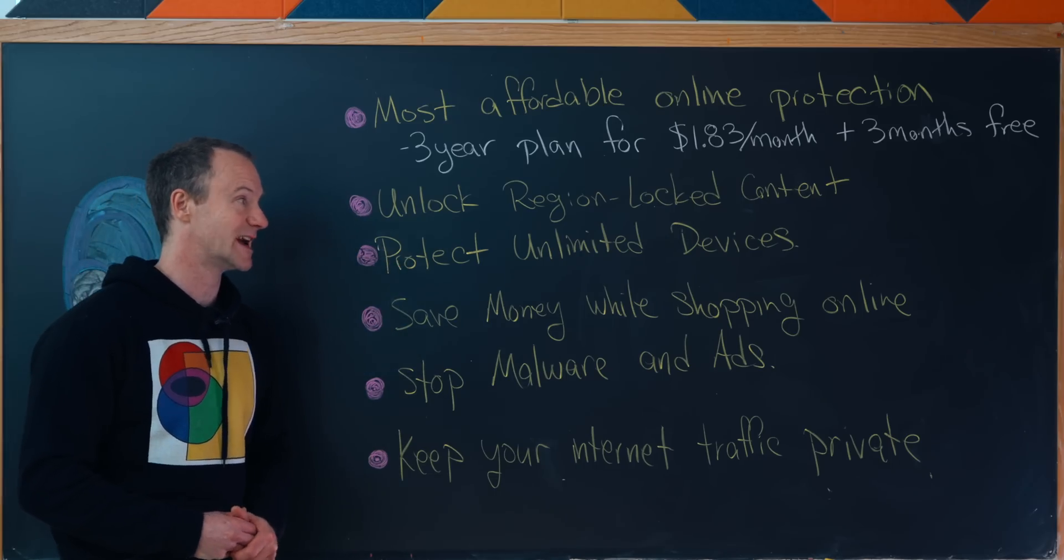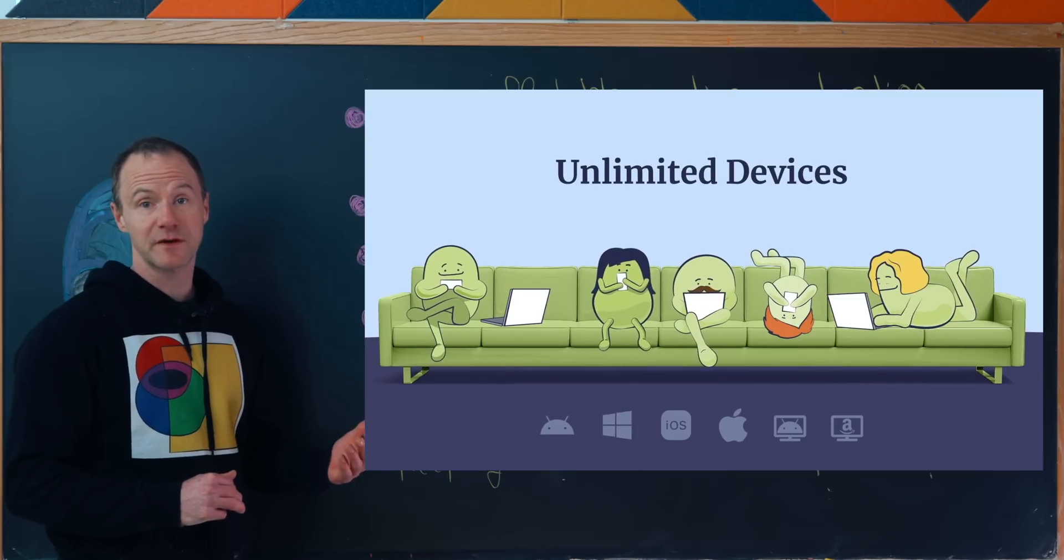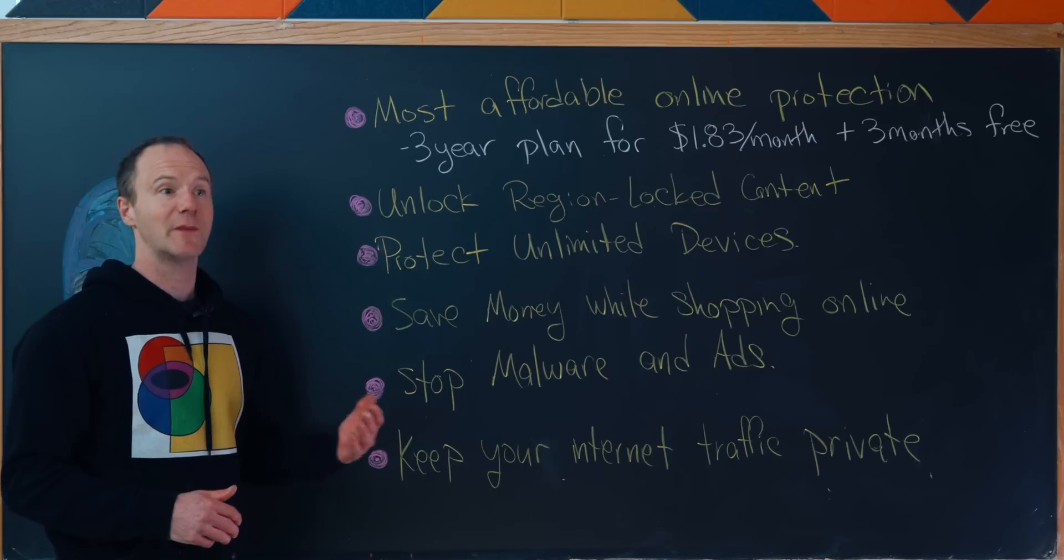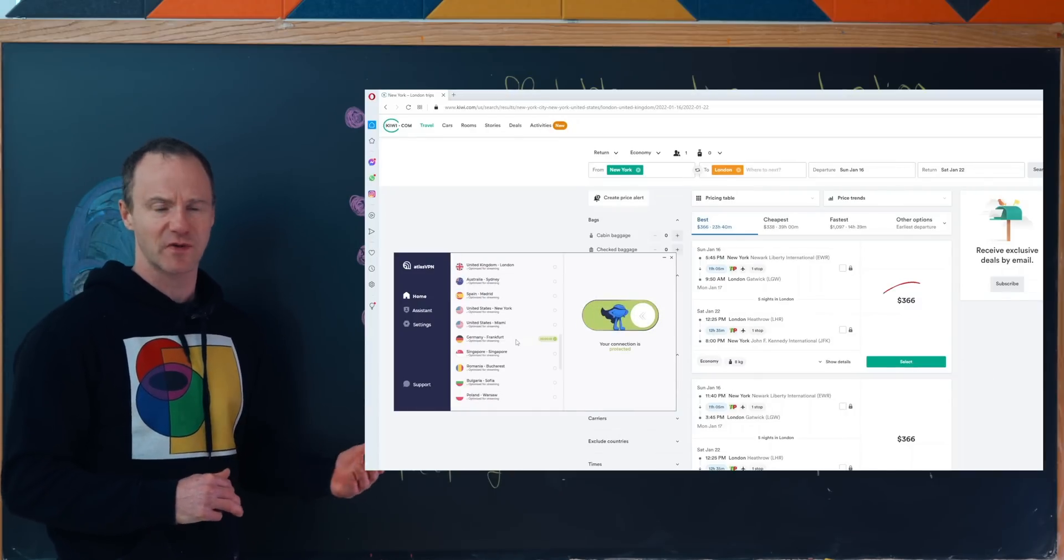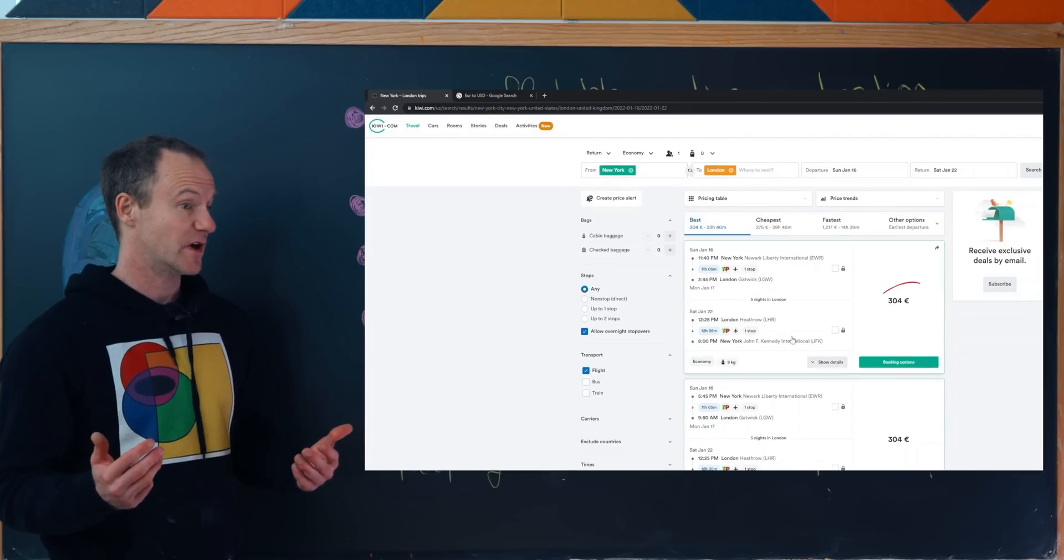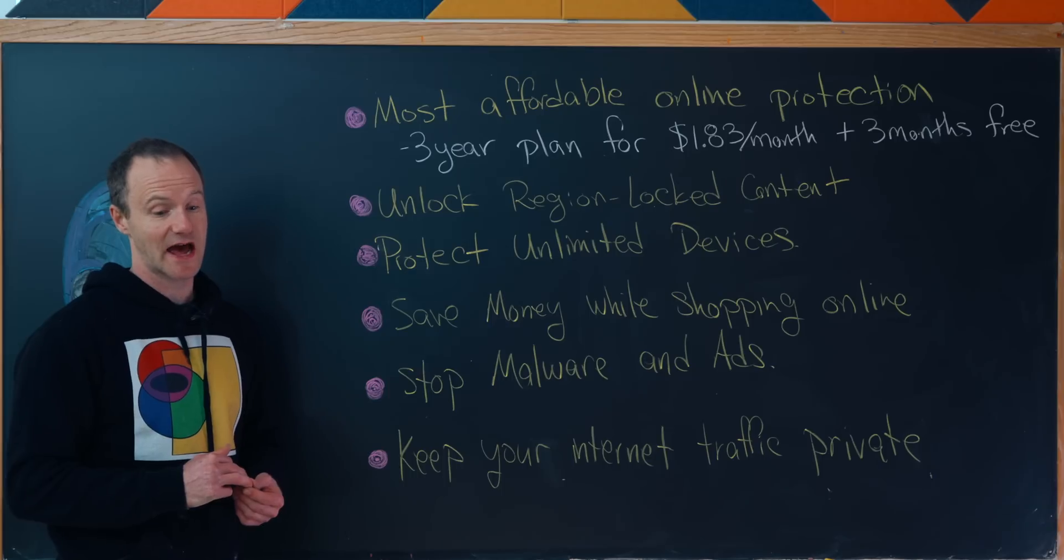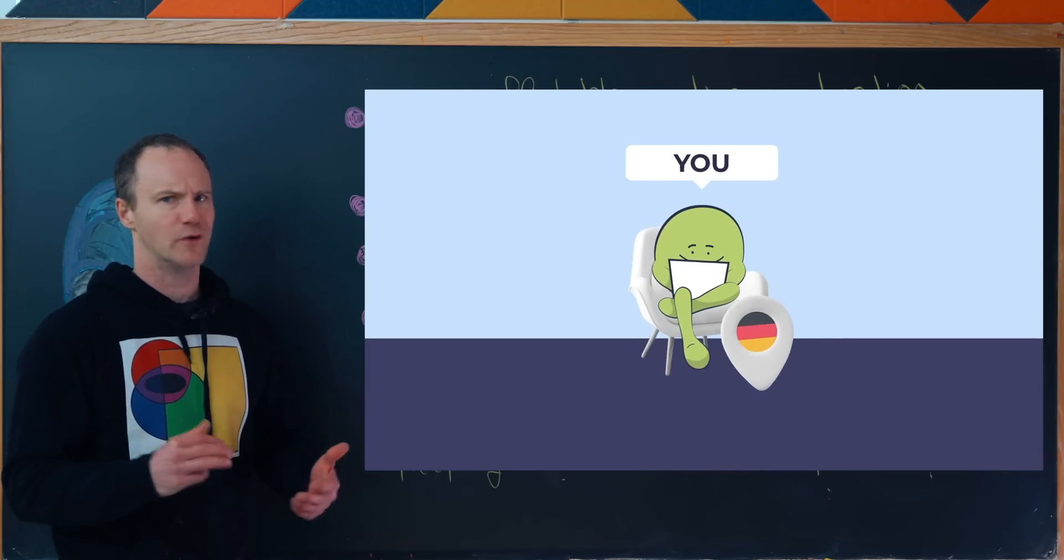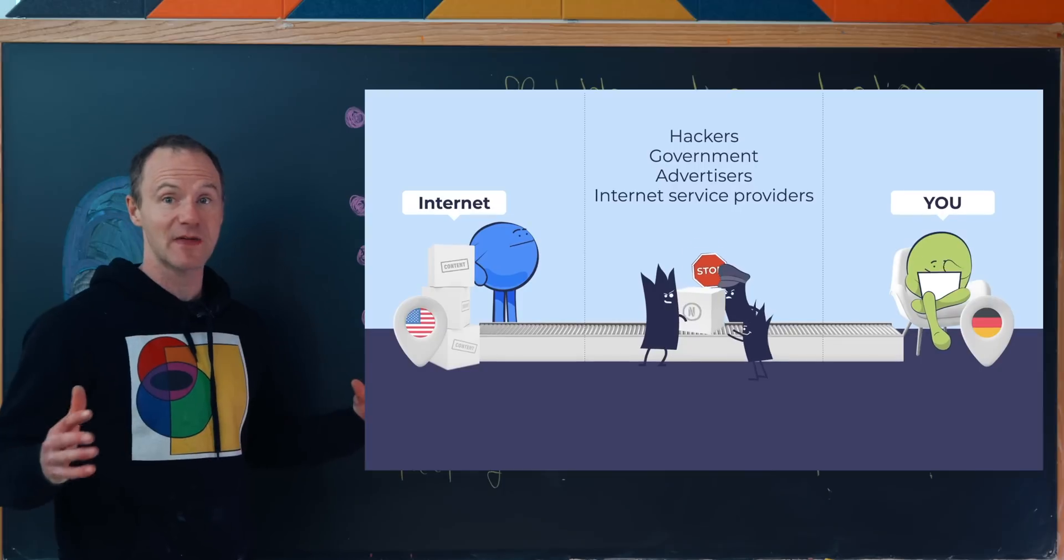So next up, Atlas VPN allows you to protect unlimited devices because I not only have a laptop, but I also want it on my phone and on my tablet. And the ability to protect all of my devices with one account, and actually all of the devices of my family members too, is just super convenient. So my next reason is one that not everyone talks about all the time, the ability to save money while shopping online. So sometimes when I'm searching for plane tickets, I've noticed that if you change your IP address to a different country, you could end up with cheaper flights. Next up, you can stop malware and be protected from the sneaky little trackers that are inside internet ads. Finally, one of the most important points is to keep your internet traffic private. You might think that when you open that incognito tab that no one can tell what's going on, but your ISP is still tracking you.